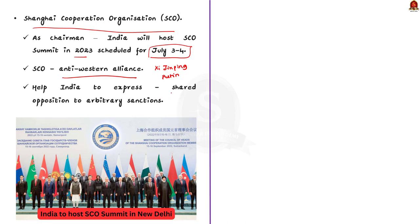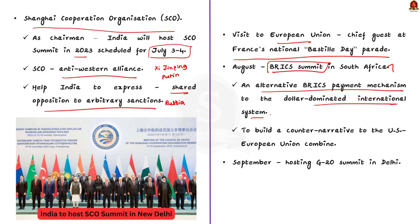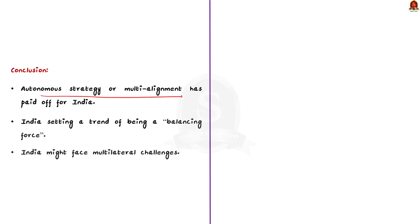The SCO forum helps India express shared opposition to arbitrary sanctions like those imposed on Russia. A week after the SCO summit, Mr. Modi will attend France's Bastille Day Parade as chief guest. In August, there is the BRICS summit in South Africa, where Mr. Modi will discuss an alternative BRICS payment mechanism to the dollar-dominated system. In September, he will host global leaders at the G20 summit in Delhi. The author says India's autonomous multi-alignment strategy has paid off, positioning India as a balancing force, though multilateral challenges remain.